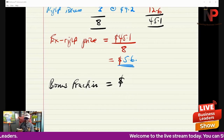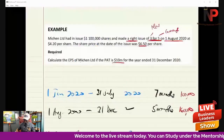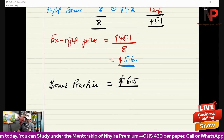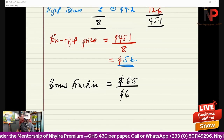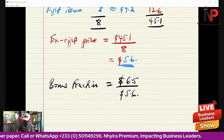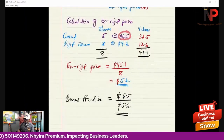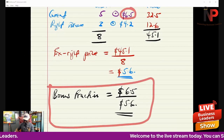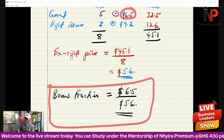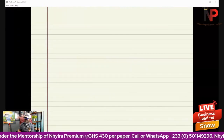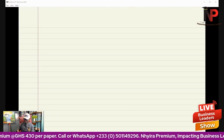Our bonus fraction will be the current share price given in the question, $6.50, divided by the theoretical X-right price we just calculated, $5.64. Leave the answer as a fraction — don't punch it out to a decimal and try to approximate. Now that we have this bonus fraction, we can pull up our schedule and calculate the weighted average number of equity shares.